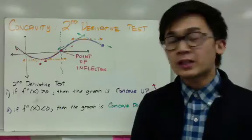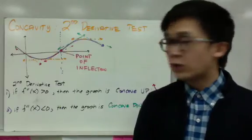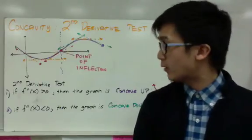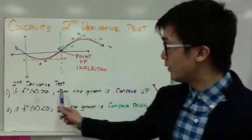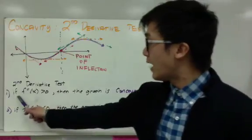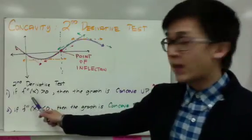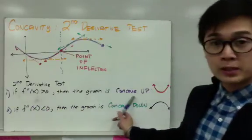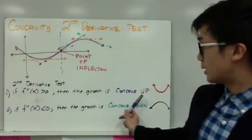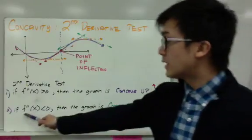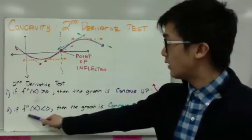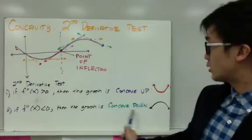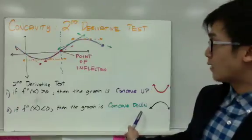Now, what is concavity and how do you know if it's concave up or concave down? Using the second derivative, if f double prime of x is greater than 0, then the graph is said to be concave up. And if the second derivative is less than 0, then the graph is said to be concave down.